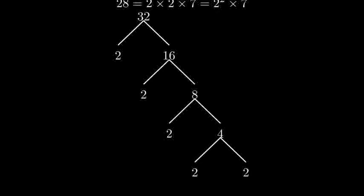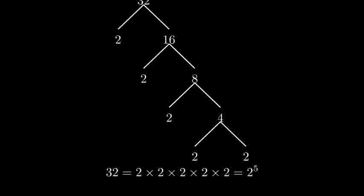Now, let's break down 32 into its prime factors. 32 can be broken down into 2 times 16. 16 breaks down into 2 times 8. 8 breaks down into 2 times 4. And finally, 4 breaks down into 2 times 2. So 32 equals 2 to the 5th power.